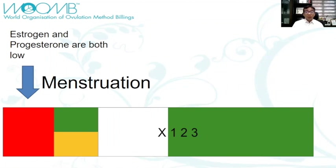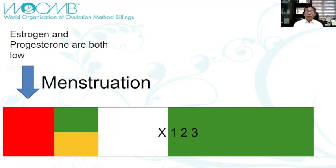But there are some cases wherein during the days of menstruation, there is an early ovulation. So with that, estrogen might be high in those days wherein there is ovarian activity during menstruation. But most of the time, during the days when there is menstrual bleeding, estrogen and progesterone are both low. During this time, the cervix is open.